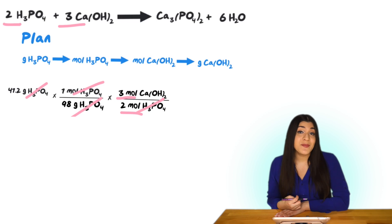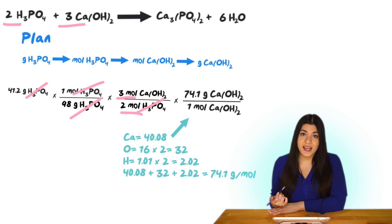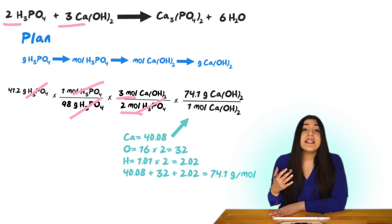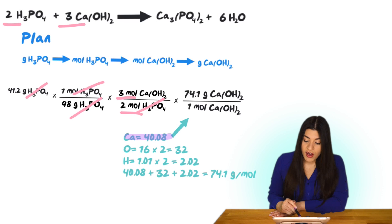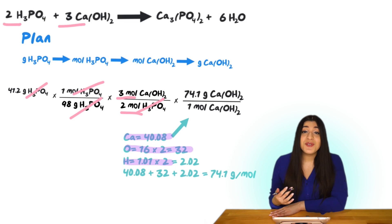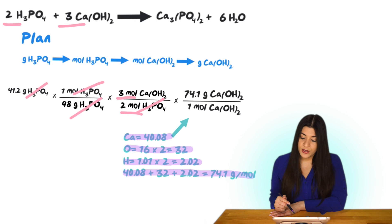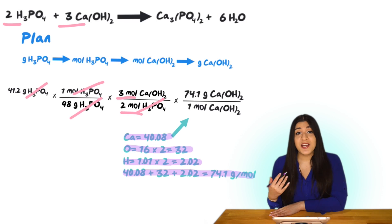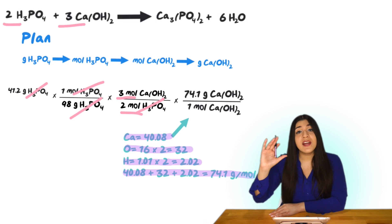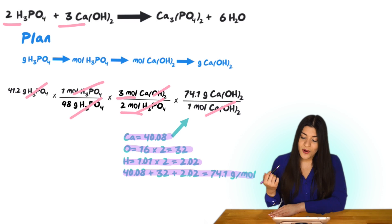The last step is to find the molar mass of calcium hydroxide, since molar mass lets us go from moles to grams. Calcium has a mass of 40.08. Oxygen is 16, but there are two oxygens, so multiplied by 2 gives 32. Hydrogen is 1.01, and multiplied by 2 gives 2.02. Adding all these masses gives a molar mass of 74.1 grams per mole for calcium hydroxide. We place grams of calcium hydroxide on top and moles of calcium hydroxide on the bottom so they cancel, arriving at grams of calcium hydroxide.